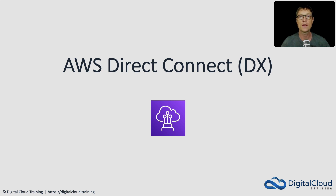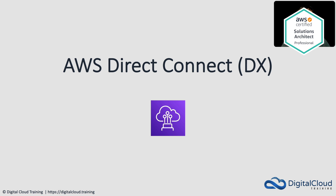AWS Direct Connect is a way that you can connect an on-premises data center or office location into AWS using a private connection. We're not using the internet; we're actually using a private network link into AWS. This can give us significant advantages in terms of bandwidth, latency, and consistent network performance. It does cost more than an AWS managed VPN across the internet, but for a lot of companies it provides significant advantages, and if you send a lot of data to AWS, it can even lower costs.